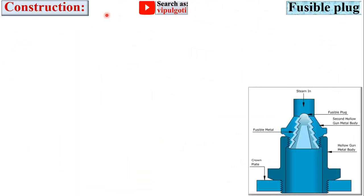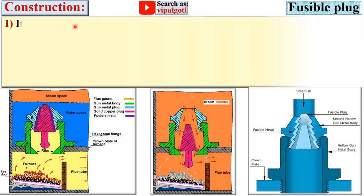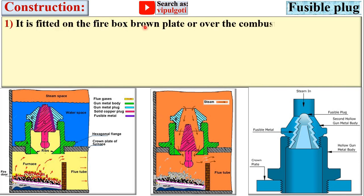Next, construction of the fusible plug. This figure can be used for examination and these two figures are useful to understand the construction. It is fitted on the firebox crown plate — here you can see this is the firebox crown plate on which it is fitted — or over the combustion chamber, as we have seen in the previous figure.